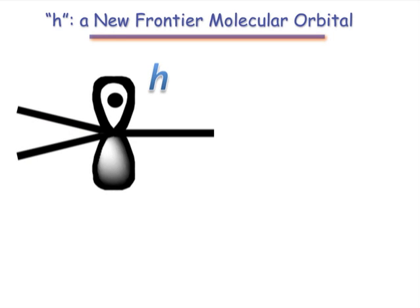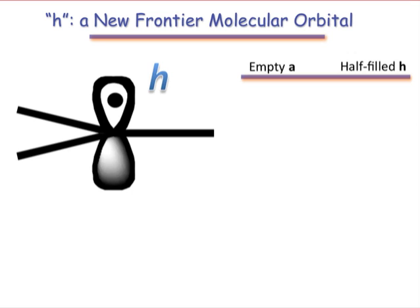Imagining the unpaired electron in an empty 2p atomic orbital allows us to add this unique frontier orbital to our repertoire of reactive frontier molecular orbitals. Like the empty atomic a orbital, the half-filled h orbital has both the appearance and energy of a 2p atomic orbital.